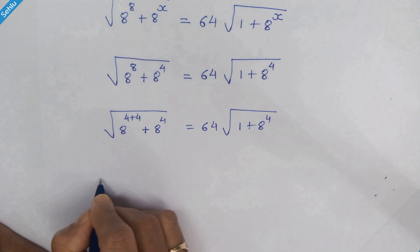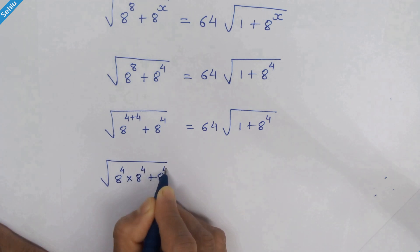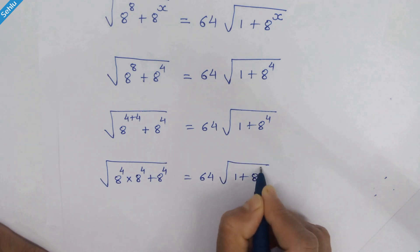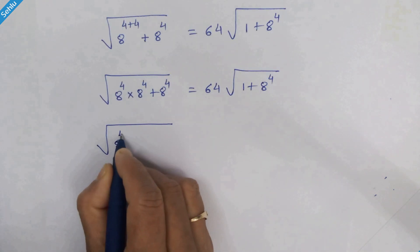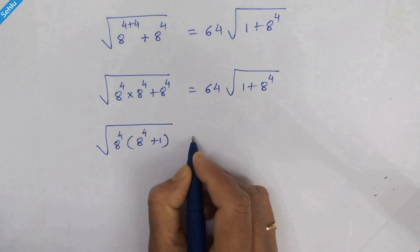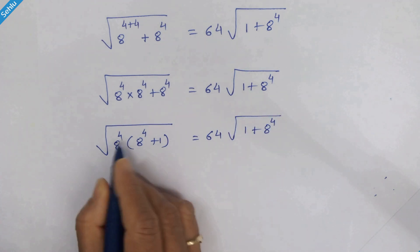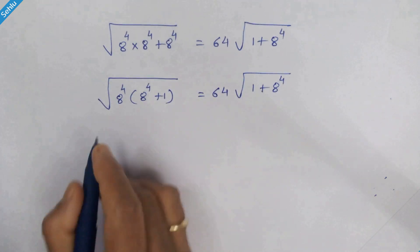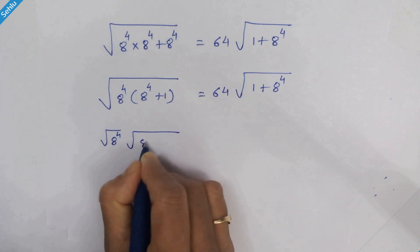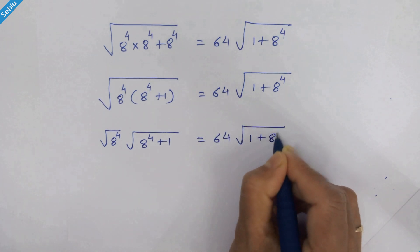This part can be written as 8 raised to 4 times 8 raised to 4 plus 8 raised to 4, equal to 64 times square root of 1 plus 8 raised to 4. We can further write the left side as square root of 8 raised to 4 times square root of 8 raised to 4 times 8 raised to 4 plus 8 raised to 4, times square root of 1 plus 8 raised to 4.